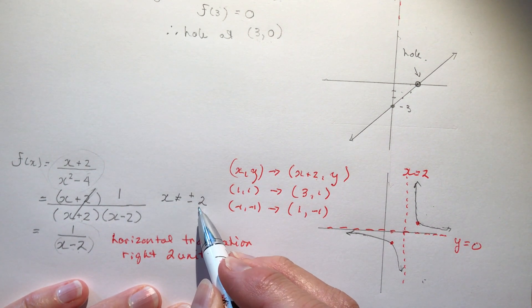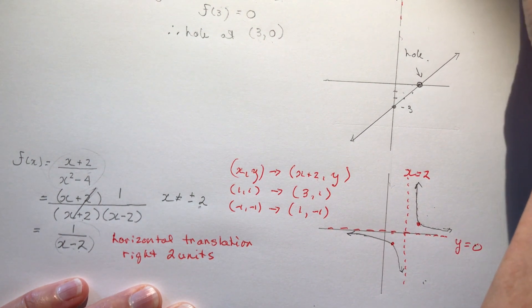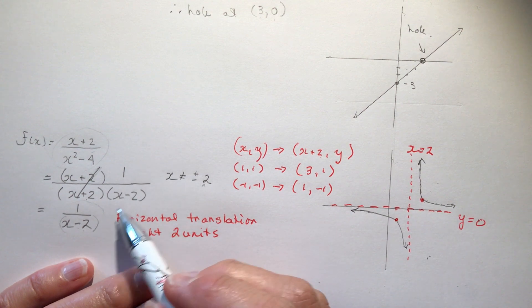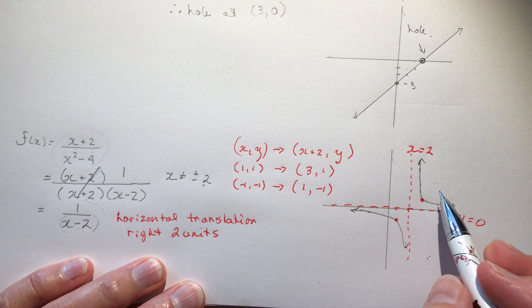How does that affect my graph? So when you have x equals minus 2, because we divided it out, that means that was a hole. So when x is minus 2.